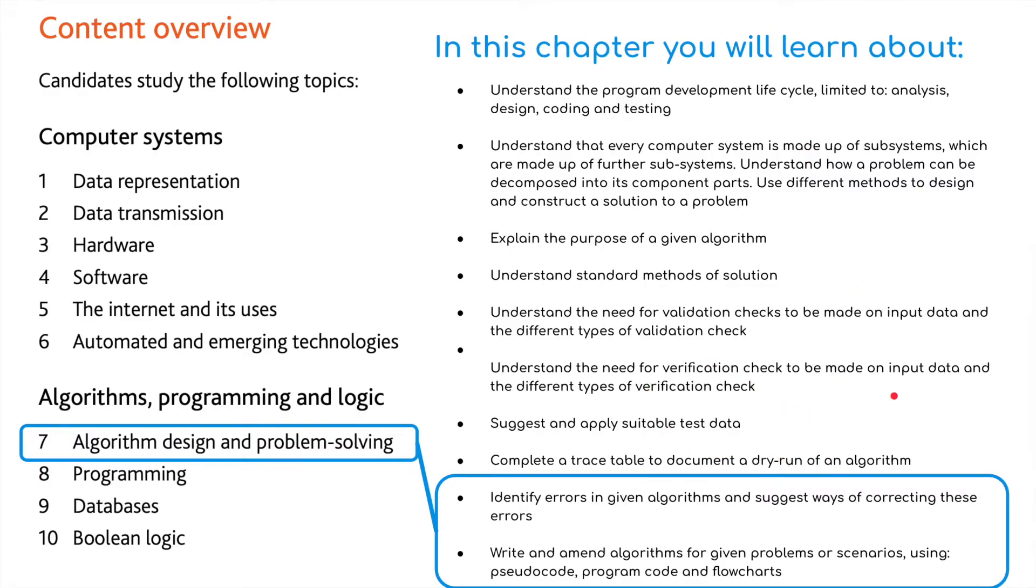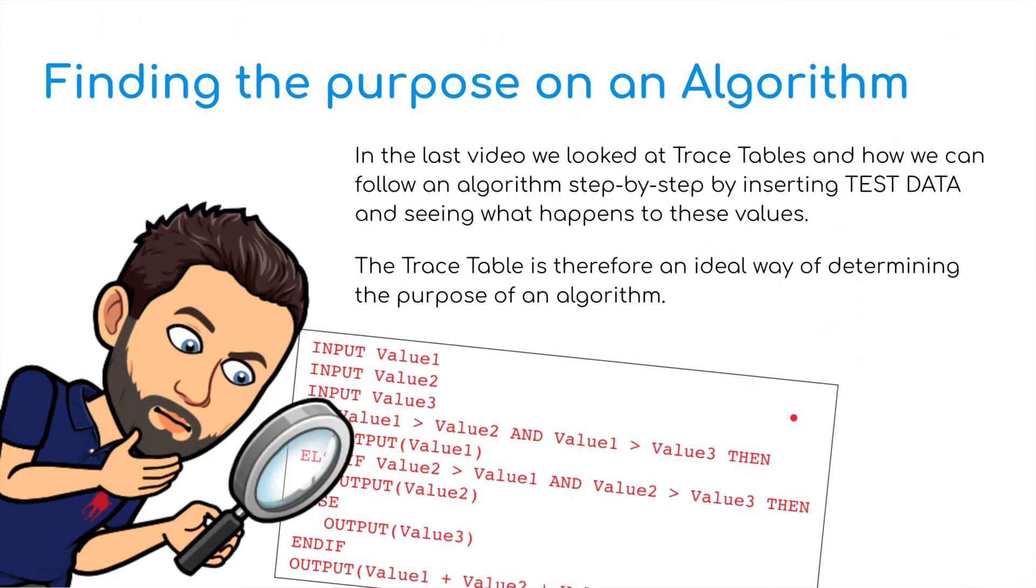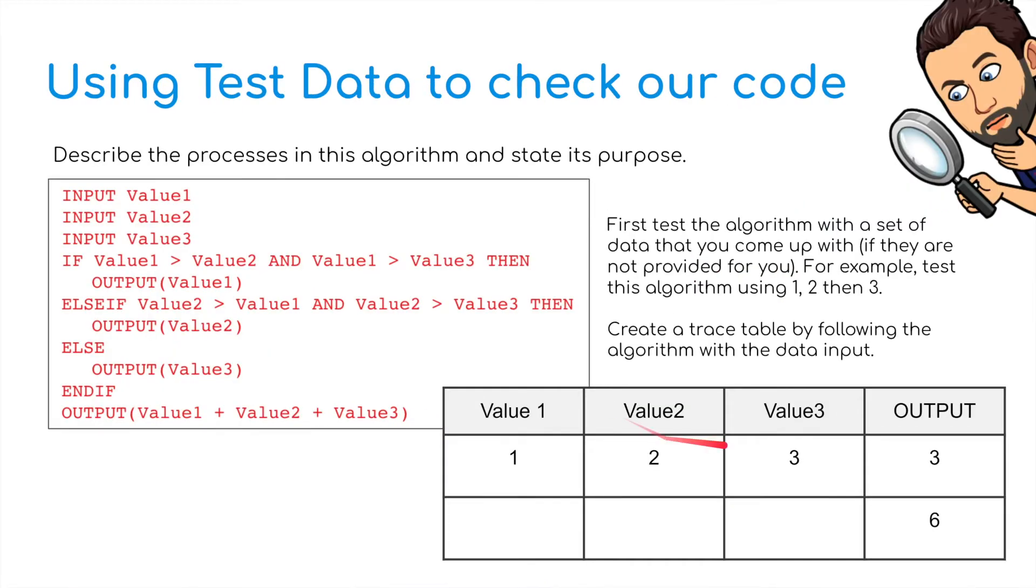Now we're going to be looking at identifying errors in algorithms. In the last video we looked at trace tables and how we can follow an algorithm step-by-step by inserting test data and seeing what happens to the values. I've got a little one here, let's have a look at this.